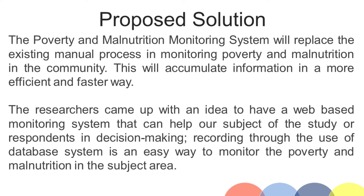The Poverty and Malnutrition Monitoring System will replace the existing manual process in monitoring poverty and malnutrition in the community. This will accumulate information in a more efficient and faster way. The researchers came up with an idea to have a web-based monitoring system that can help their respondents in decision-making. Recording through the use of a database system is an easy way to monitor poverty and malnutrition in the subject area.